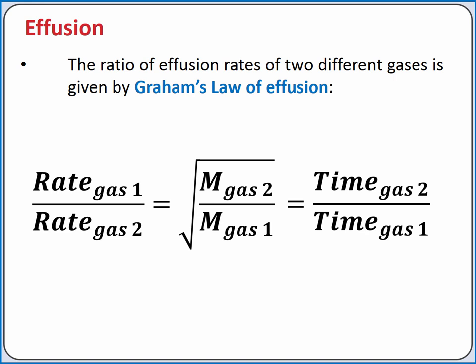Since the rate of effusion and the time it takes for a gas to effuse are inversely proportional, we can also say this is equal to the time it takes for gas 2 to effuse divided by the time for gas 1 to effuse.